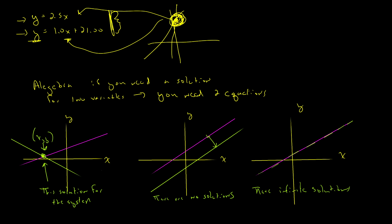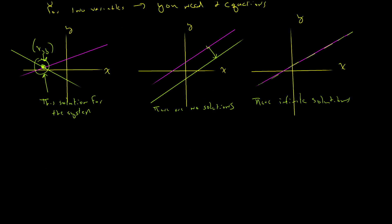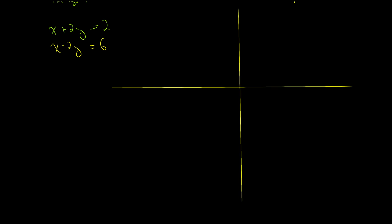So systems give us three possibilities: one unique solution, no solutions, or an infinite number of solutions. The graphical method of solving is to graph the equations and find the point of intersection, or to see that they don't intersect. I'm going to use an example and graph by hand first so we can see what's happening numerically, and then I'll graph with technology to get a better number.